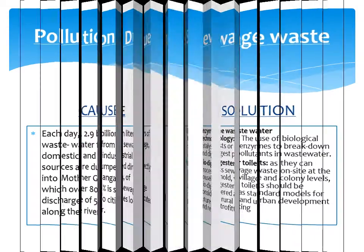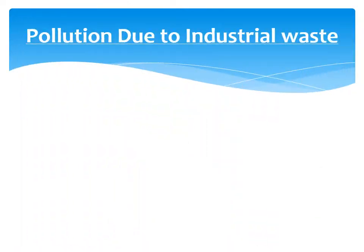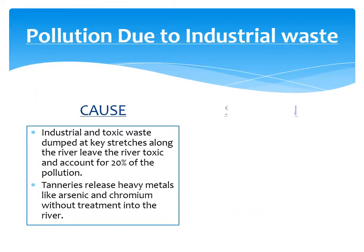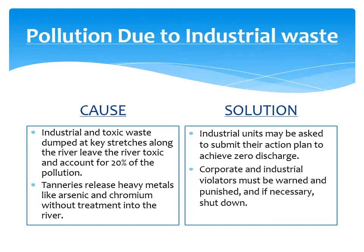Pollution due to industrial waste: Industrial and toxic waste dumped at key stretches along the river leave it toxic and account for 20% of the pollution. Tanneries release heavy metals like arsenic and chromium into the river. Solution: Industrial units may be asked to submit their action plan to achieve zero discharge. Corporate and industrial violators must be warned and punished.